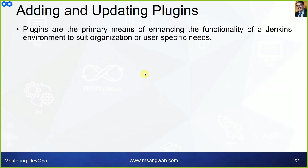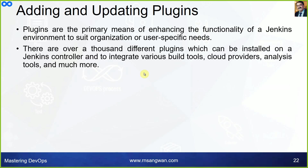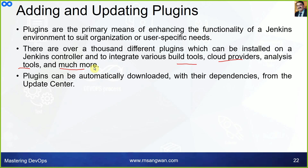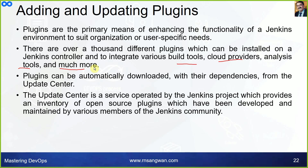Adding and updating plugins: plugins are the primary means of enhancing the functionality of a Jenkins environment to suit organization or user-specific needs. There are over a thousand different plugins which can be installed on a Jenkins controller to integrate various build tools, cloud providers, analysis tools, and much more. Plugins can be automatically downloaded with their dependencies from the Update Center, a service operated by the Jenkins project providing an inventory of open-source plugins developed and maintained by the Jenkins community.